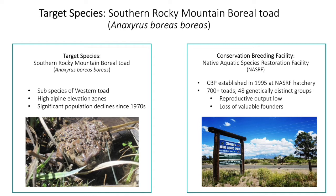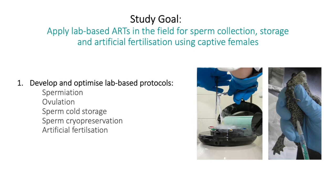NASRAF houses over 700 boreal toads maintained in genetically distinct groups. Reproductive output can vary markedly each year, and inconsistent breeding together with an aging population could compromise the breeding program through the loss of valuable founder individuals. But removal of individuals from the wild for genetic augmentation could detrimentally impact free-living counterparts. Therefore, the ability to augment the captive population's genetic diversity without influencing wild population demographics would be highly advantageous. We wanted to validate sperm induction, collection, and storage techniques in the wild, to determine whether these could enhance the captive population through integration of wild sperm by artificial fertilization using eggs from females housed at NASRAF.